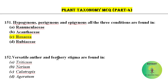Versatile Anther and Feathery Stigma are found in family Poaceae. Among these, Triticum is a member of family Poaceae. So these two characters are found in Triticum.